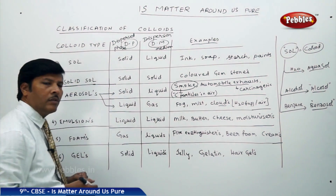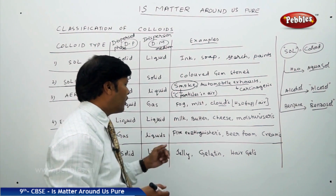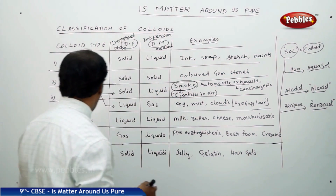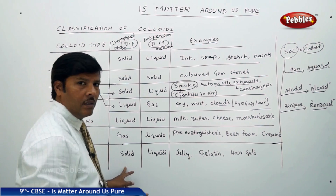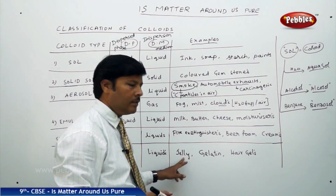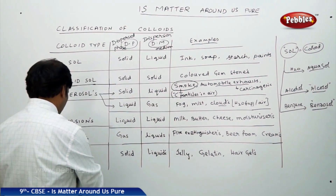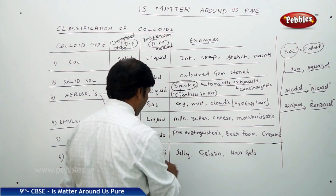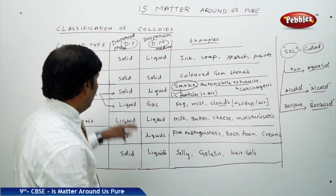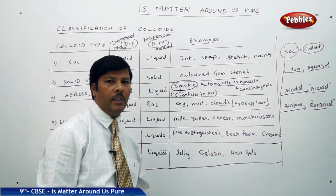Emulsion is a form of colloid. Foams are gas in liquid type of colloids — fire extinguishers, beer foams, and creams are made up of foams. Gels are solid in liquid colloids — fruit jelly, gelatin, and hair gels all come under gel-type colloids. This is a detailed classification of various types of colloids based on the type of dispersed phase and dispersion medium with their corresponding examples.